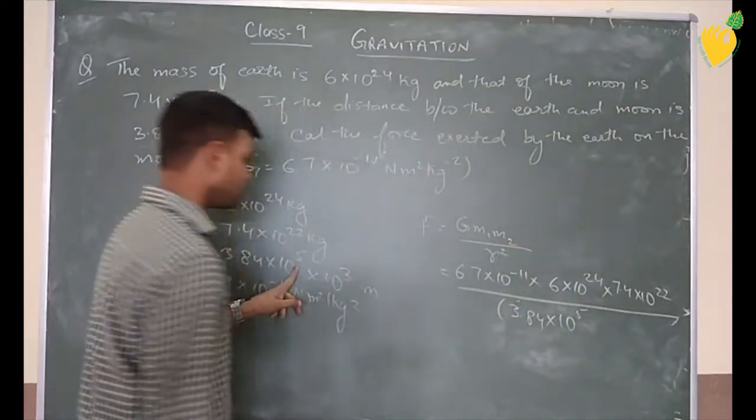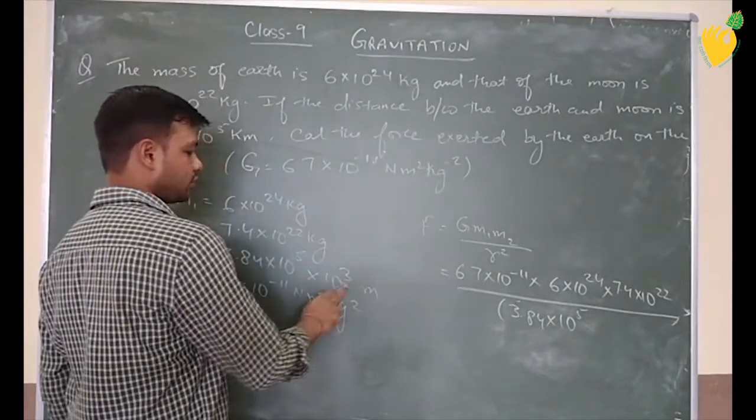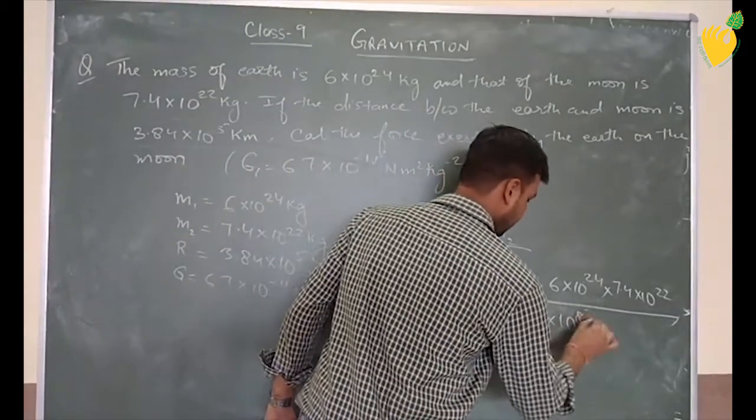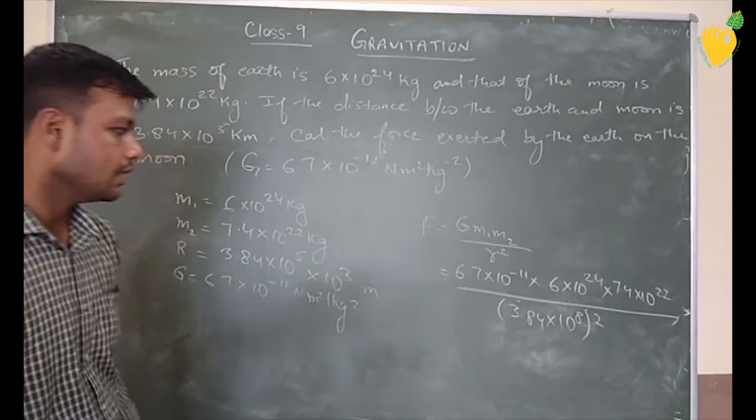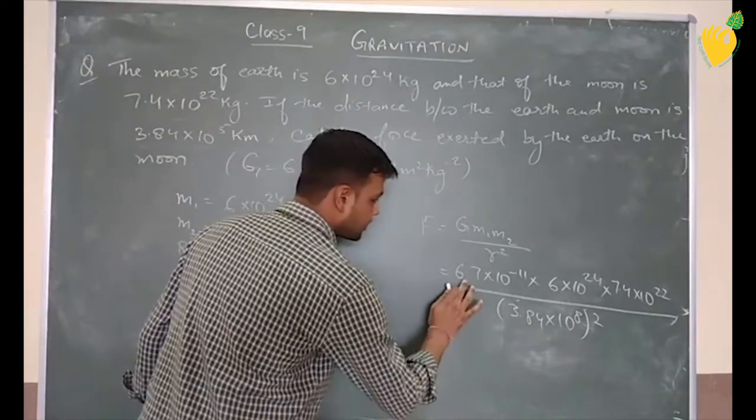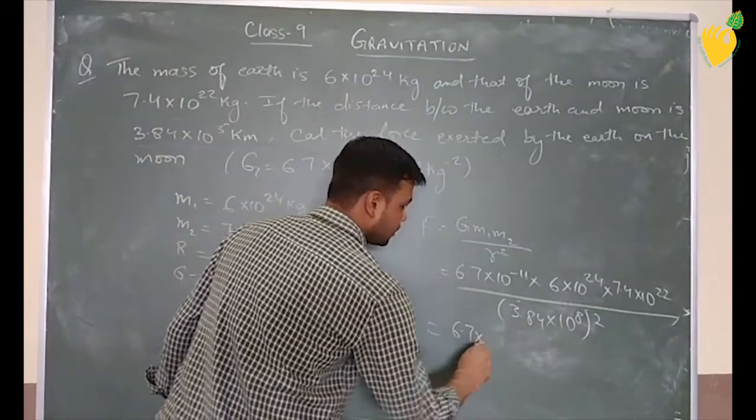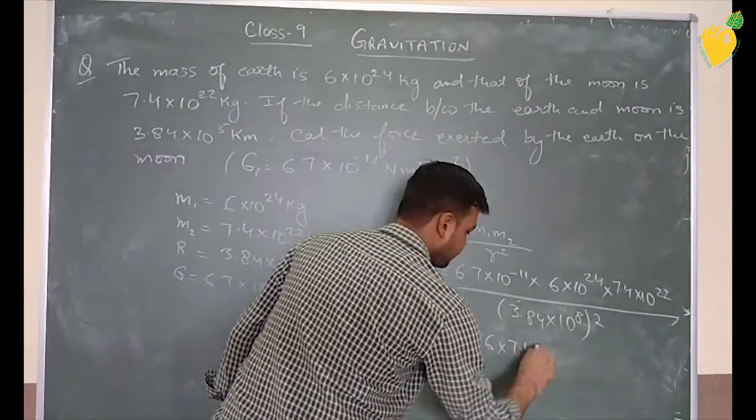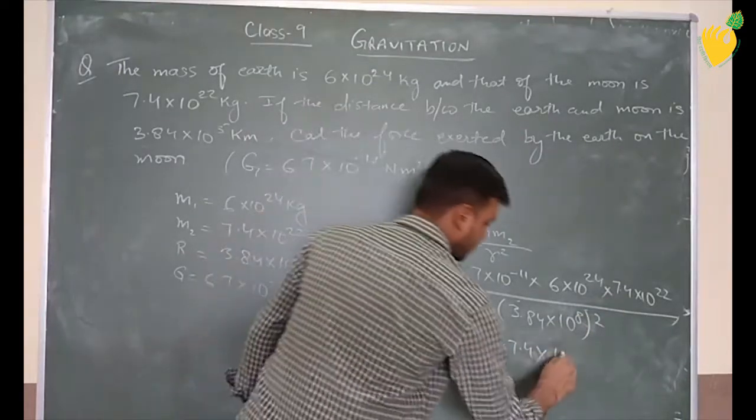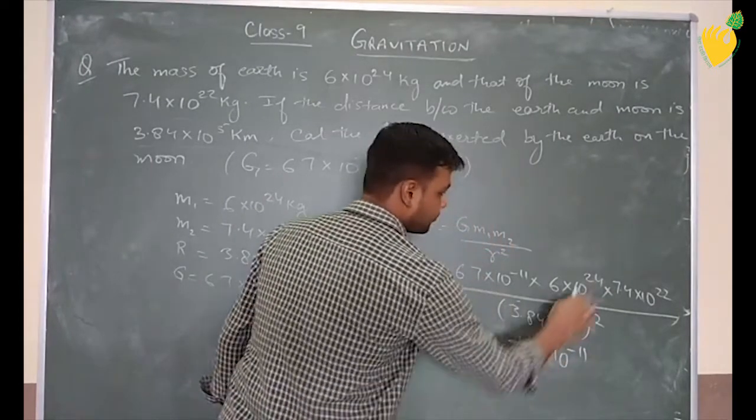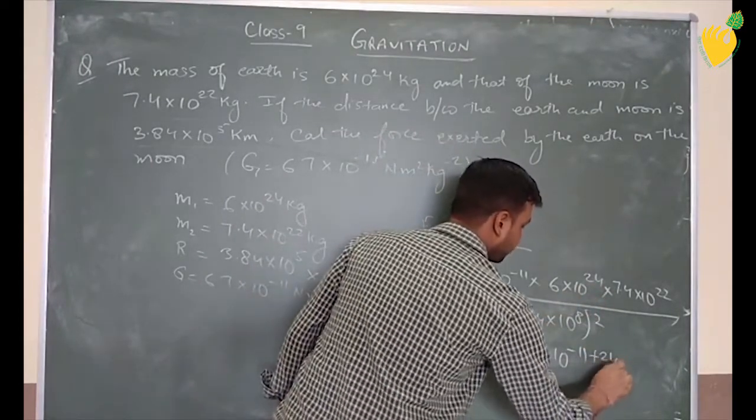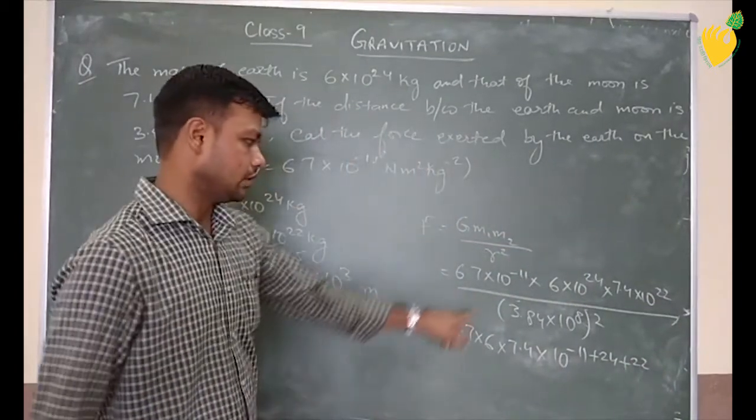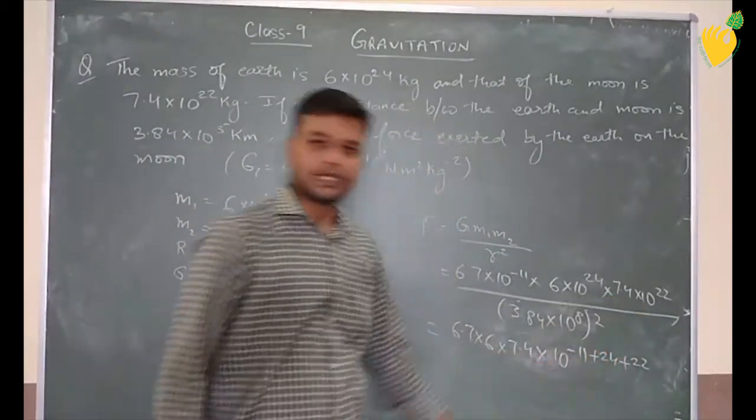We take the formula at 10 to the power 5 or 10 to the power 3. The G value is on the same power side. We get it together, we get square. Our score, G value is 6.7 into 6 into 7.4 into 10 to the power minus 11 plus 24 plus 22.